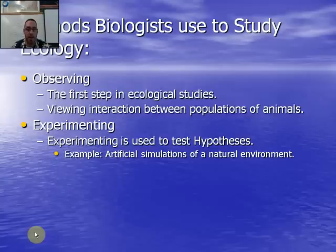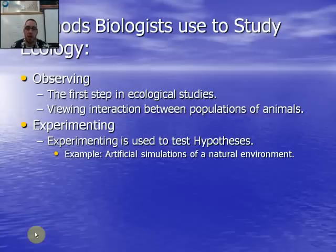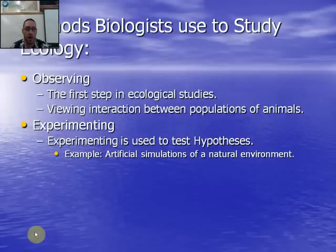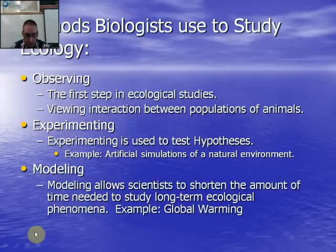Once we've done the observation step, we move to the next part: experimenting. We form a hypothesis, go through the scientific method, and try to simulate some of those behaviors in a lab — manipulating conditions to create expectations. Our goal in science and biology is to make useful predictions about what's going to happen in the environment, and experimenting is a key part of that. I'll be using explorelearning.com for some artificial simulations, but people also go out and manipulate actual environments.